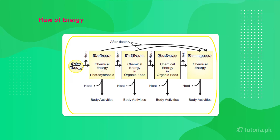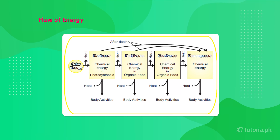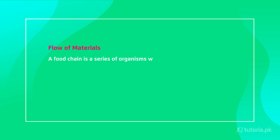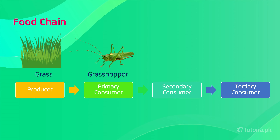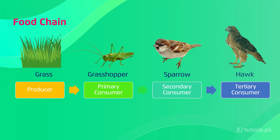In the form of food chains and food webs — a food chain is a series of organisms within an ecosystem in which each organism feeds on the one before it and is fed upon by the one after it. For example, producers are plants or grass, then the primary consumer is a grasshopper, then the secondary consumer could be a sparrow, and then there is a tertiary consumer — a hawk — that feeds on the sparrow. This way many food chains exist.